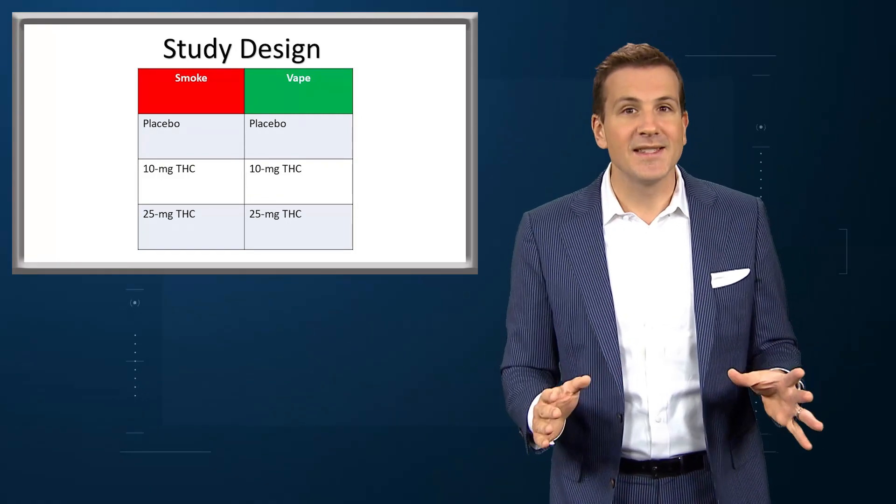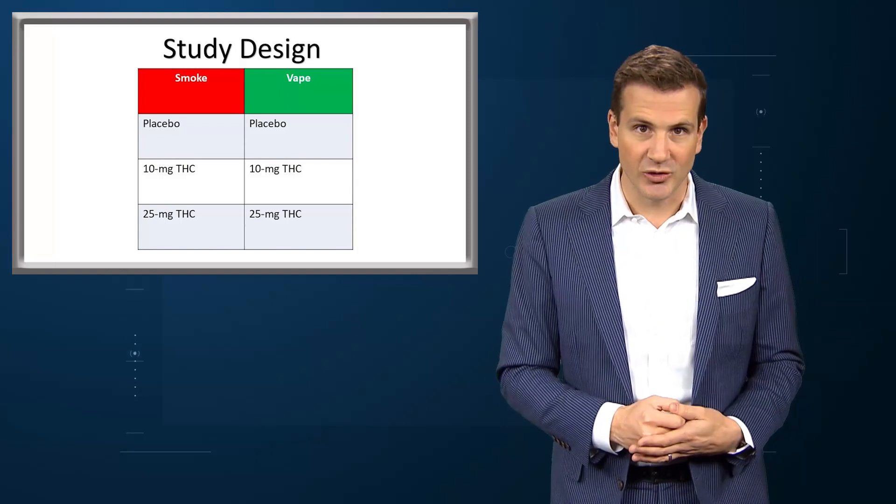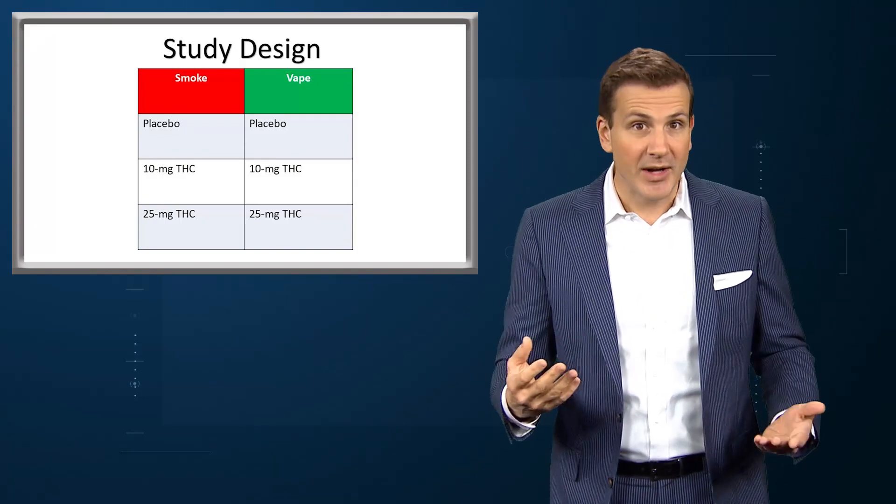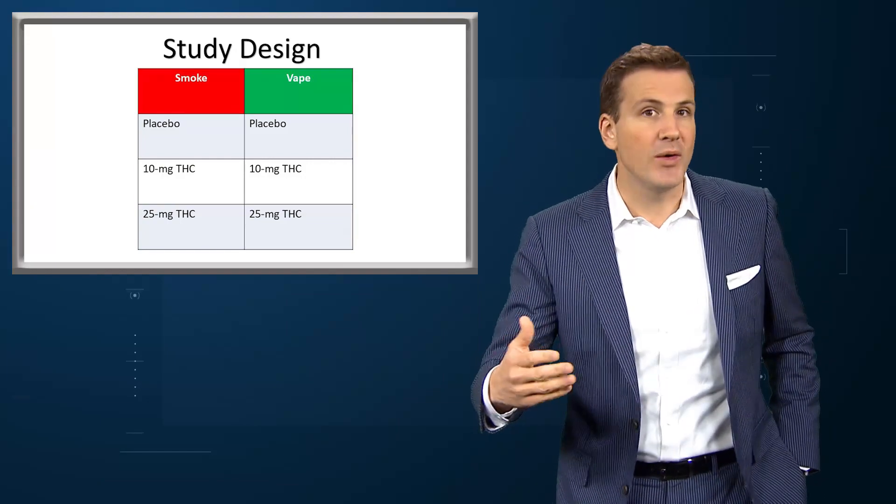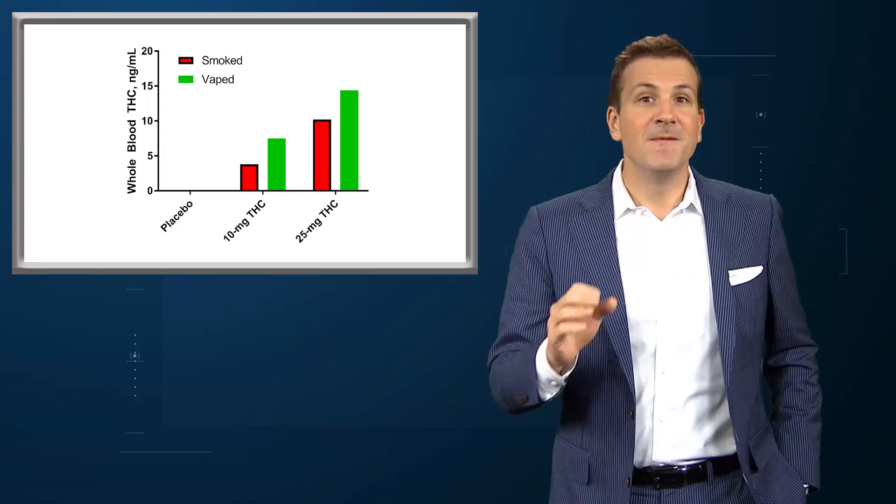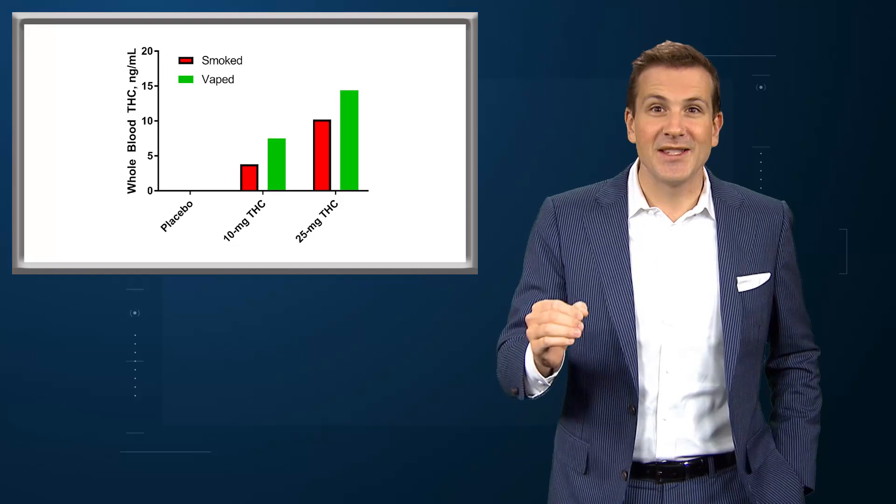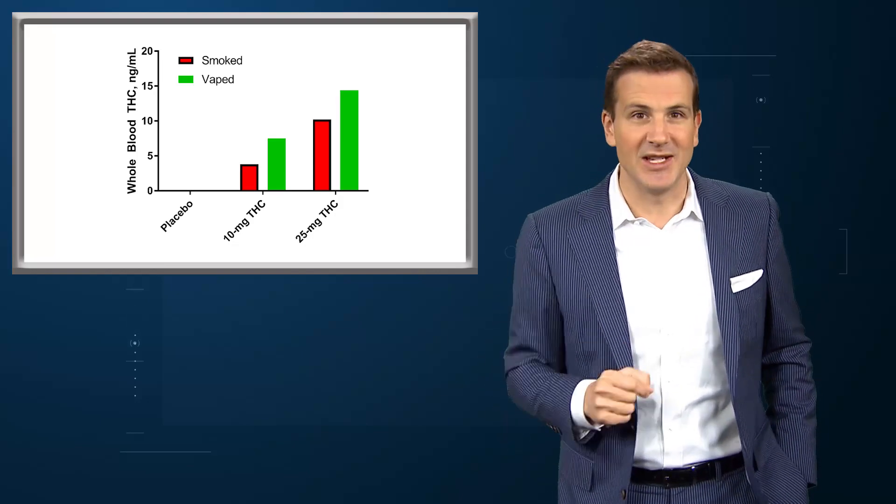All the tests told the same story. Vaping delivered substantially more THC to the bloodstream and had substantially greater cognitive effects compared to smoking. Take a look at the peak THC levels under the different conditions. Vaping 10 mg of THC led to nearly as high THC levels as smoking 25 mg of THC.